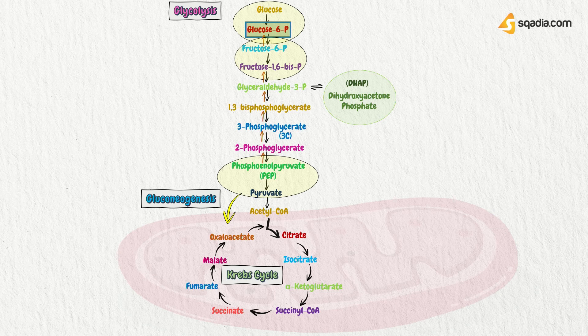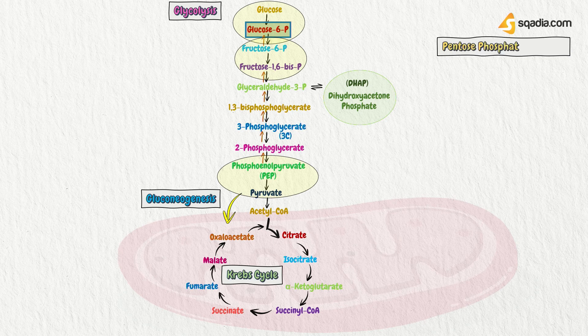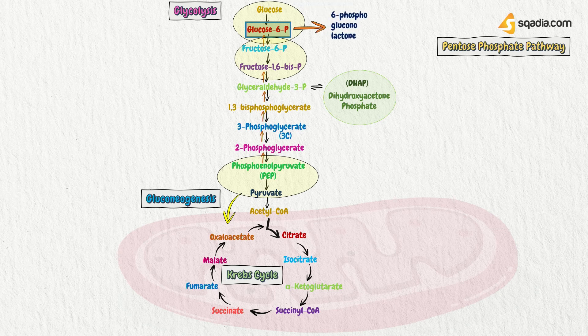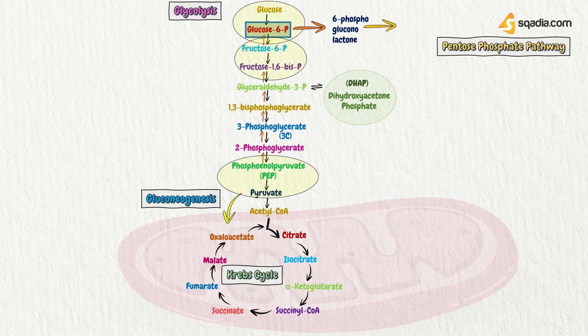So, there's another pathway that is generated from glucose 6-phosphate, and it is known as pentose phosphate pathway. And this is used for the generation of ribose sugar and NADPH molecules. What happens is glucose 6-phosphate converts itself into 6-phosphogluconolactone, and from that it converts into 6-phosphogluconate.